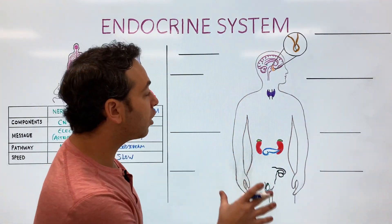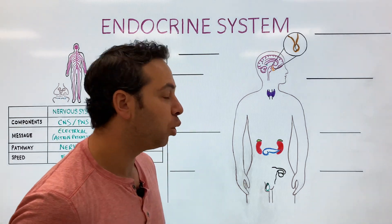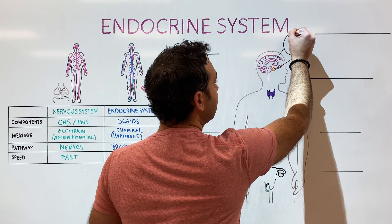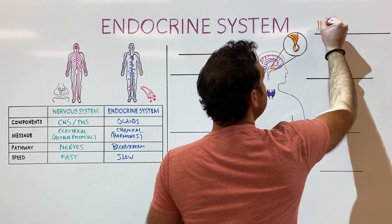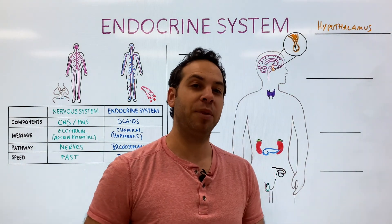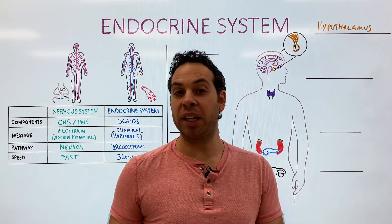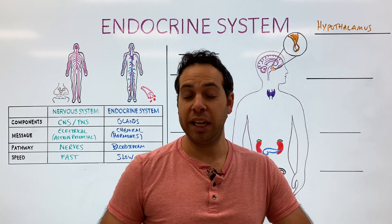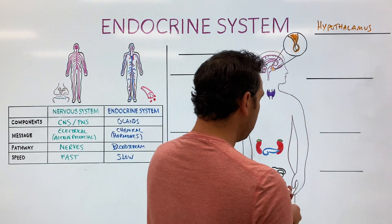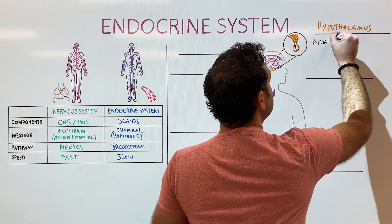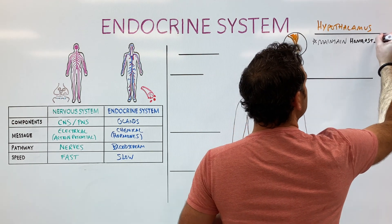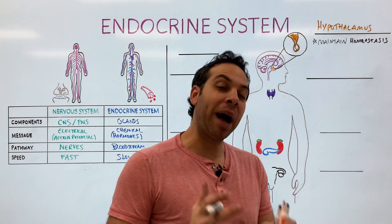Now let's start with our endocrine system and the glands that make it up. We're going to start with the most important, which is the hypothalamus. This is extremely important — it is the command center. It's the part of the brain that essentially maintains or regulates homeostasis. If you're too hot, you need to get cold; if you're too thirsty, you need to drink; if you're hungry, you need to eat; if you're sleepy, you need to sleep. Its main function is to maintain homeostasis and keep our body in a balanced state.